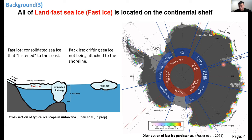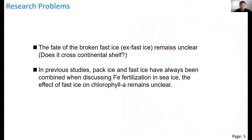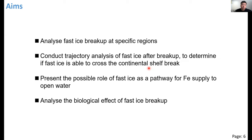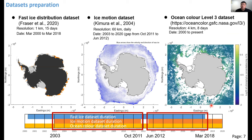The research problems are: first, does the broken fast ice cross the continental shelf and get exported to off-shelf regions? Second, in previous research, pack ice and fast ice have always been combined when discussing iron fertilization, and the effect of fast ice specifically on chlorophyll remains unclear. The research objectives are: analyze fast ice breakup at specific regions, conduct trajectory analysis after breakup to determine if fast ice crosses the shelf break, and present possible roles of fast ice as an iron supply pathway.